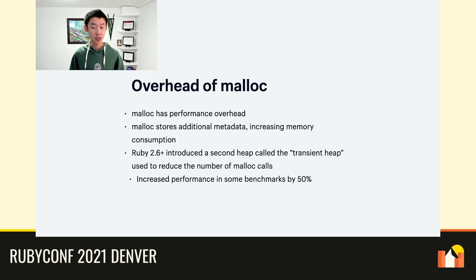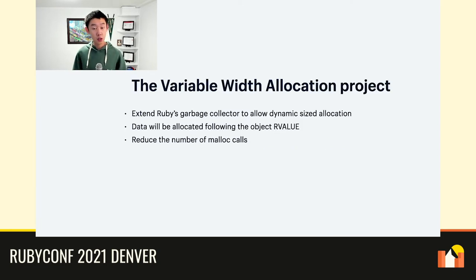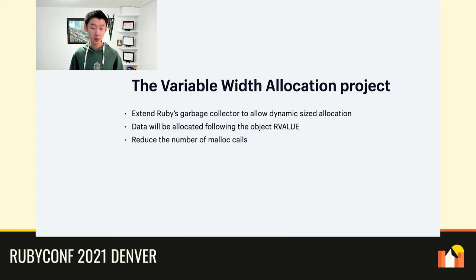We're not the first ones trying to tackle this issue. Ruby 2.6 introduced a second heap called the transient heap that aims to speed up Ruby by reducing the number of malloc calls. It was successful at improving performance — some benchmarks saw improvement by up to 50%. However, the transient heap has technical limitations and cannot be a true malloc replacement. One of the major goals of this project is to improve the overall performance of Ruby by letting Ruby control its memory layout rather than relying on the malloc system library. Since Ruby's garbage collector is aware of the memory structure of each type, it can optimize for faster allocation and better efficiency, improving cache locality and avoiding malloc system calls.